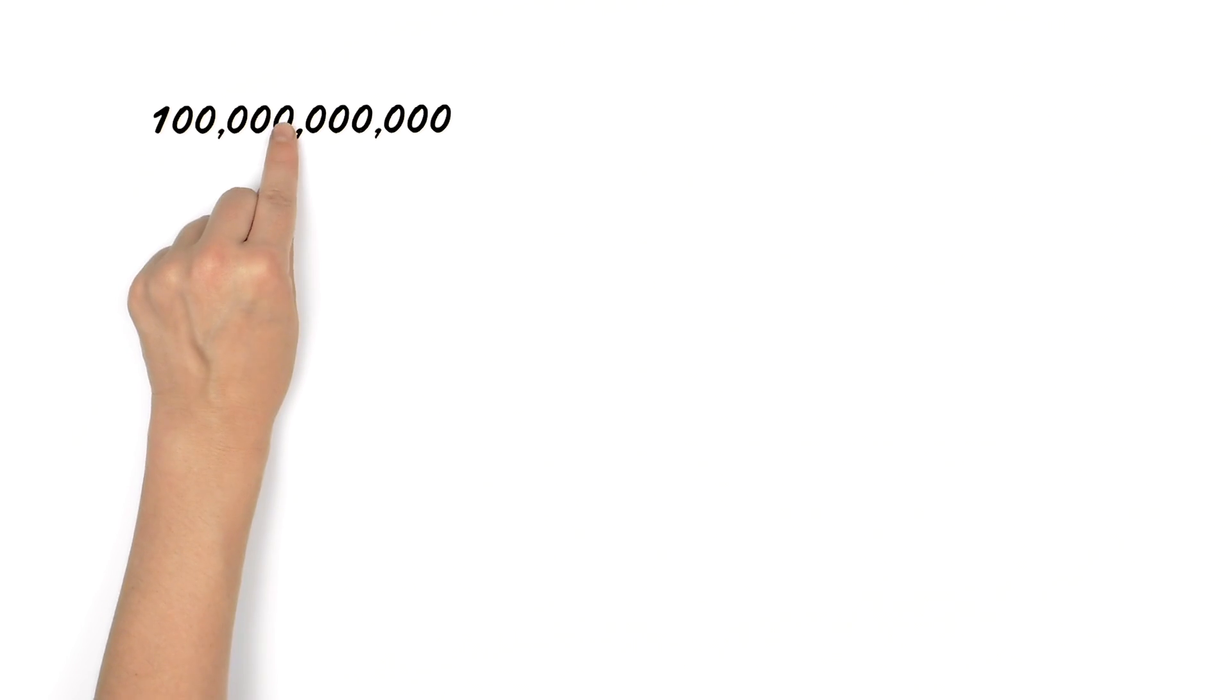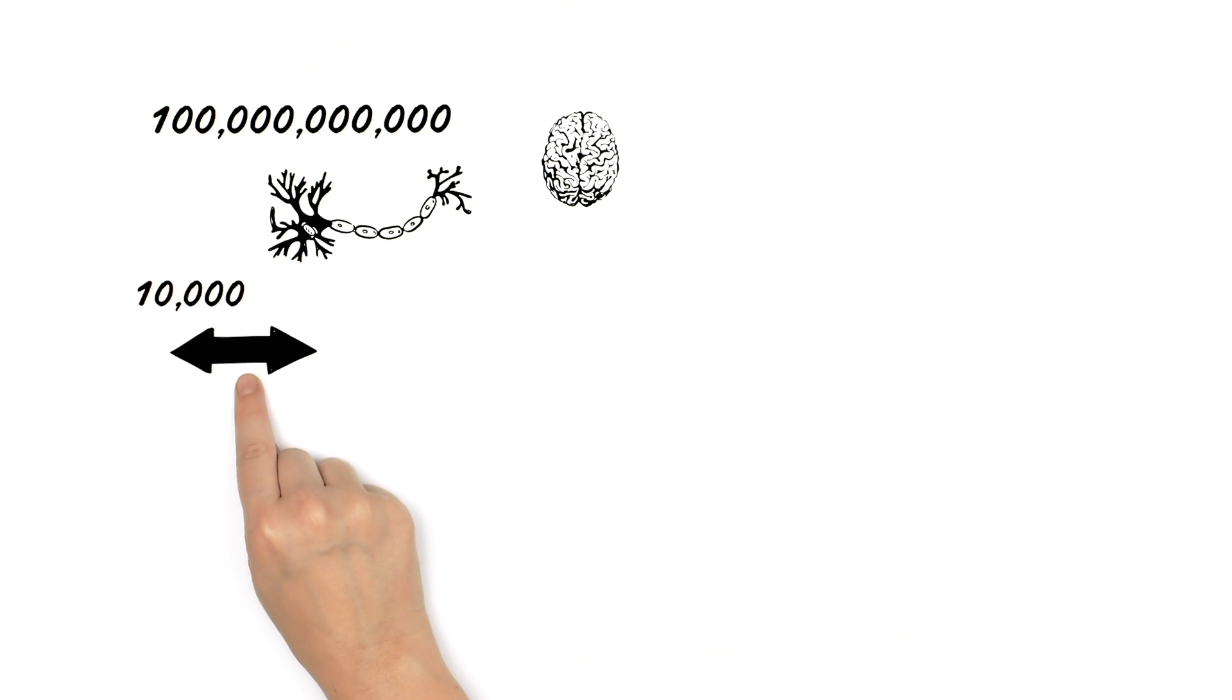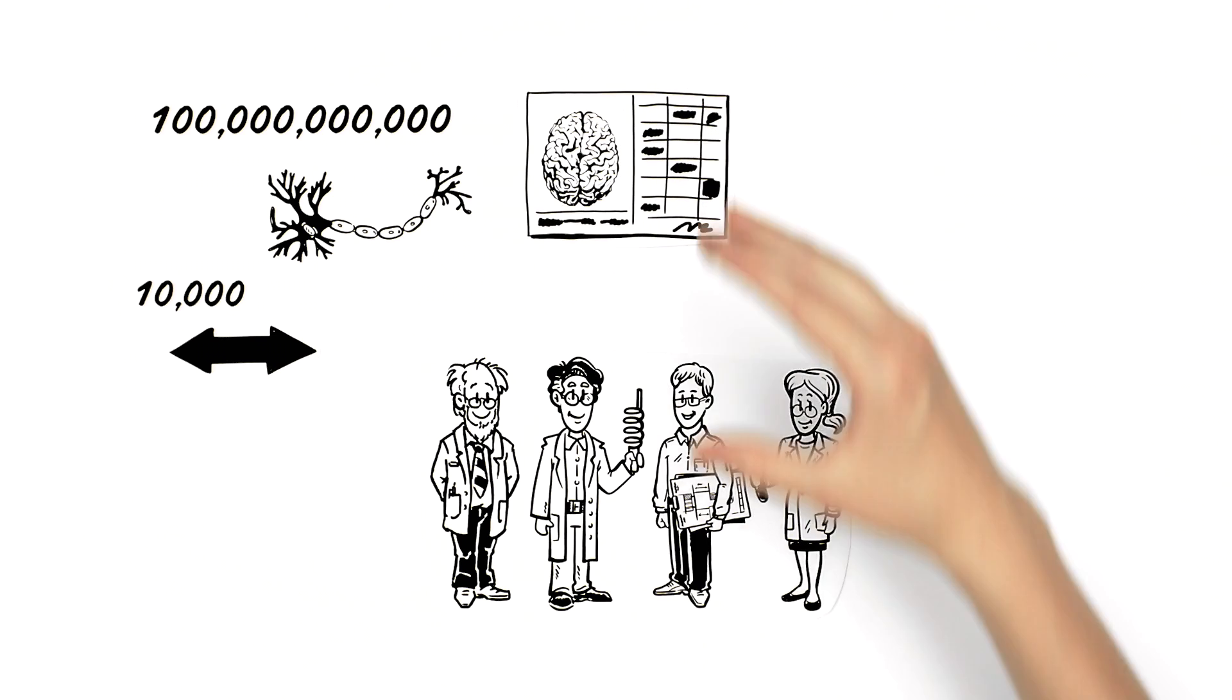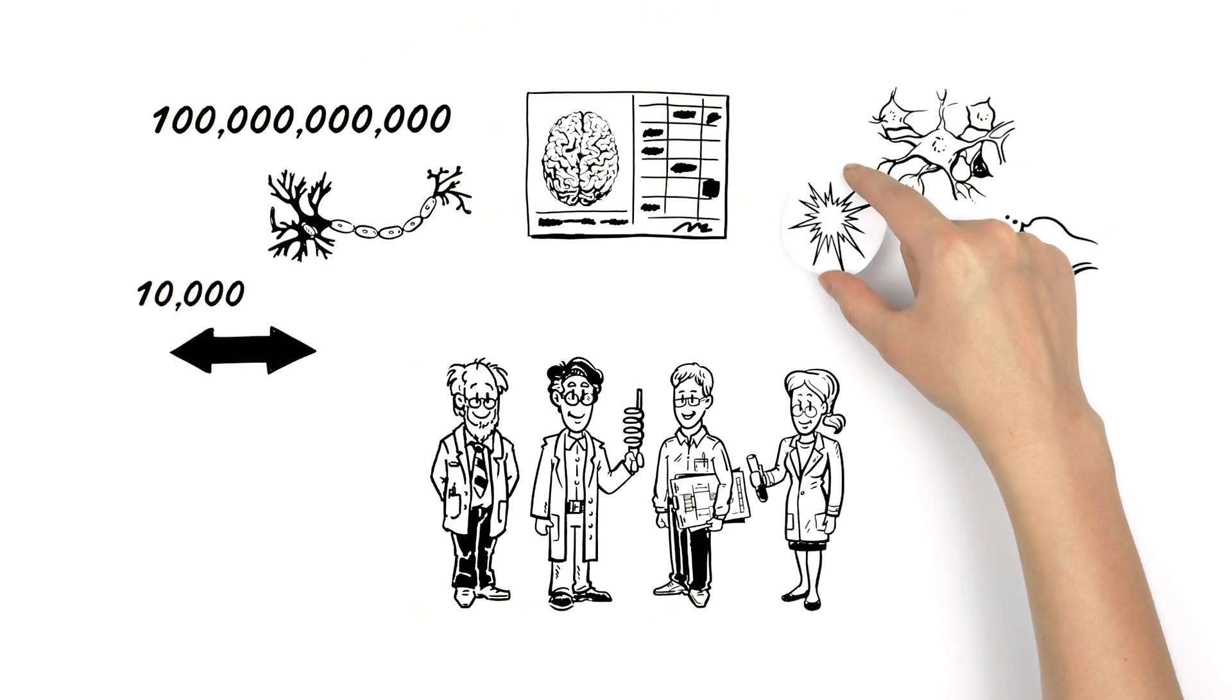There are roughly 100 billion neurons in the human brain. Each of those neurons has approximately 10,000 connections. Researchers at the Allen Institute are making a catalogue of the different parts of the brain, which includes the cells, synapses and circuits.